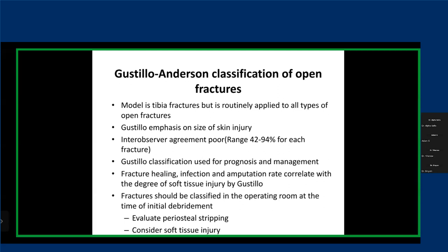We use multiple classification systems, but the most popular is the Gustilo-Anderson classification system. Initially designed for the tibia, we use it for most open fractures. It's easy for communication and has prognostic value and management implications. Even though the inter-observer agreement is poor — two people may classify the same fracture differently — Gustilo-Anderson classification is very popular and everyone should be well-versed in it. If you tell me it's a Gustilo-Anderson one, I'll have a very different impression than if you tell me it's a 3B or 3C, because the prognosis and management are very different.